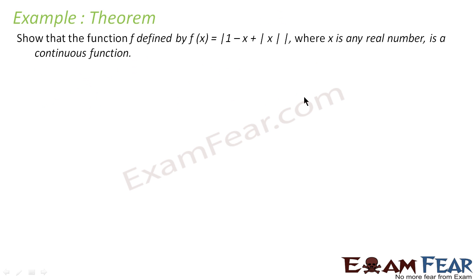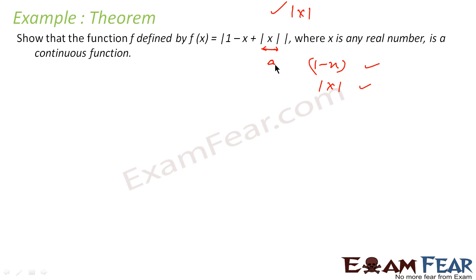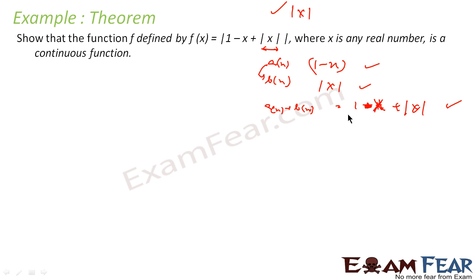Let's take one more example: prove that |1 − x| + |x| is a continuous function. We know |x| is continuous. If we let a(x) = |1 − x| and b(x) = |x|: we know 1 − x is continuous and |x| is continuous, so a(x) = |1 − x| is continuous. Then a(x) + b(x) = |1 − x| + |x|, which is also a continuous function since it is a sum of two continuous functions.